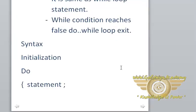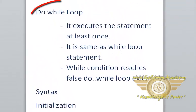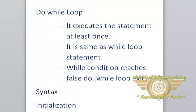Now, let's take a look at the third loop — do while loop. It executes the statement at least once. This is the same loop as the while loop statement. While condition reaches false, the do while loop exits.